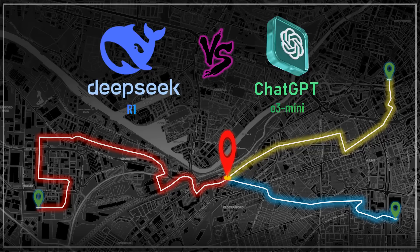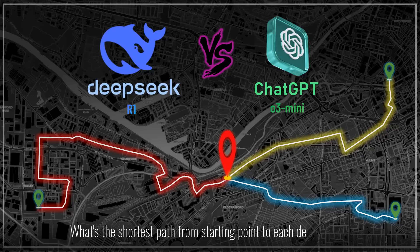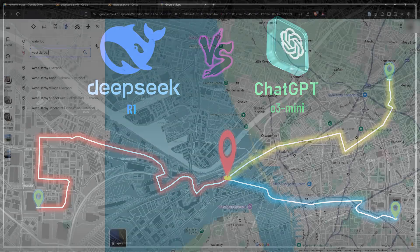In this exercise, I'm trying to get these AI models to generate the shortest walking paths from a specific starting address to a bunch of different addresses — and not only that, I'm asking them to plot these routes on a map. And if you think about it, this is quite similar to what we've probably done at some point with Google Maps.